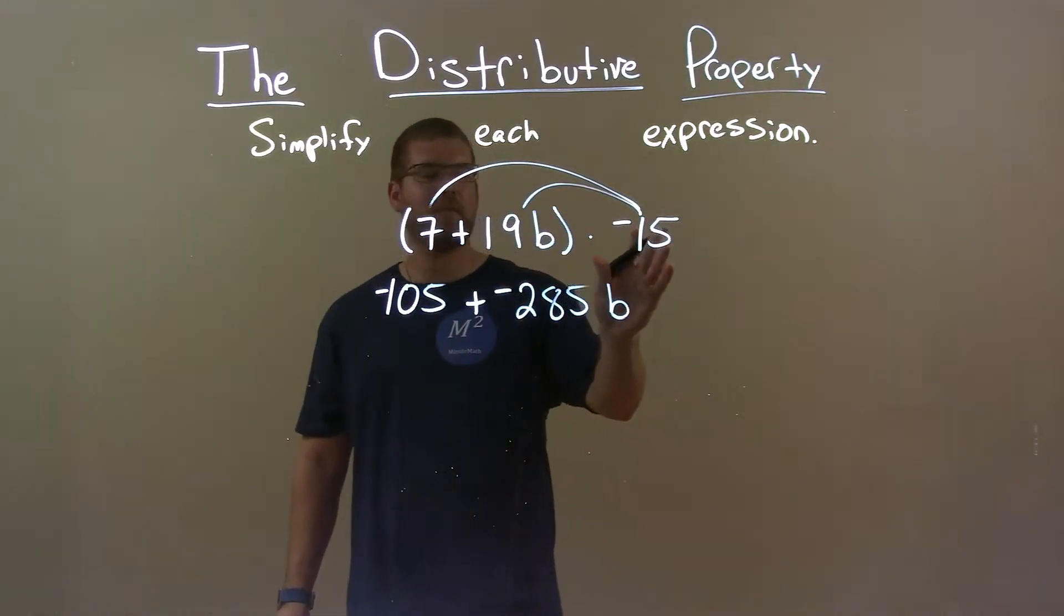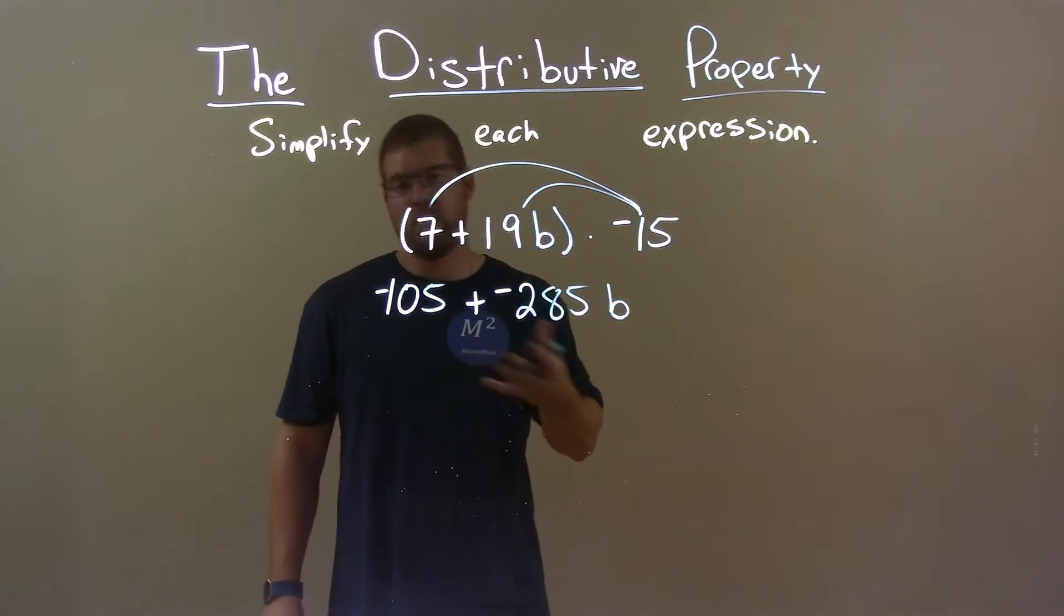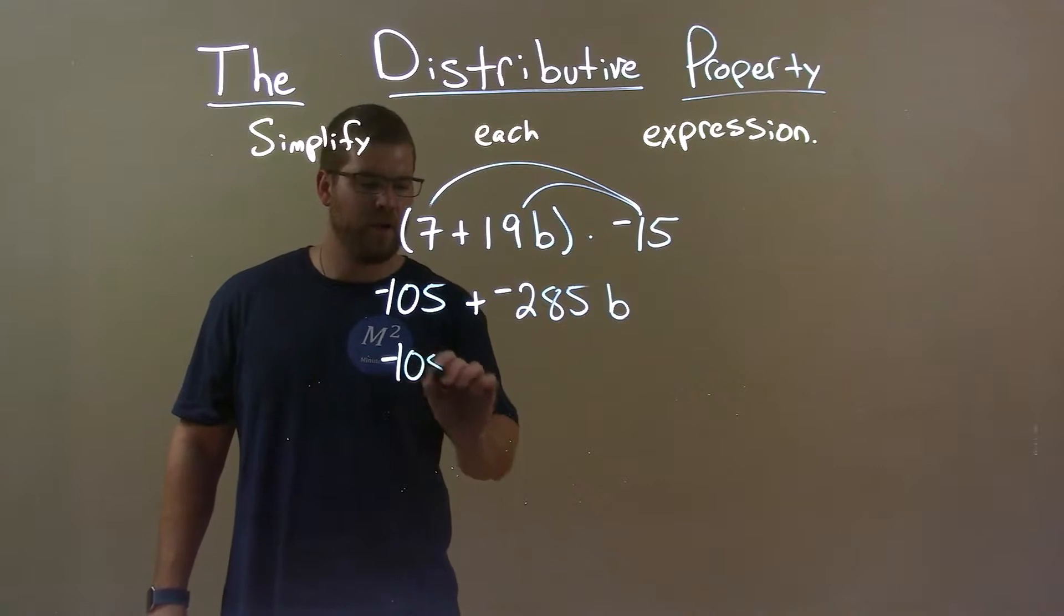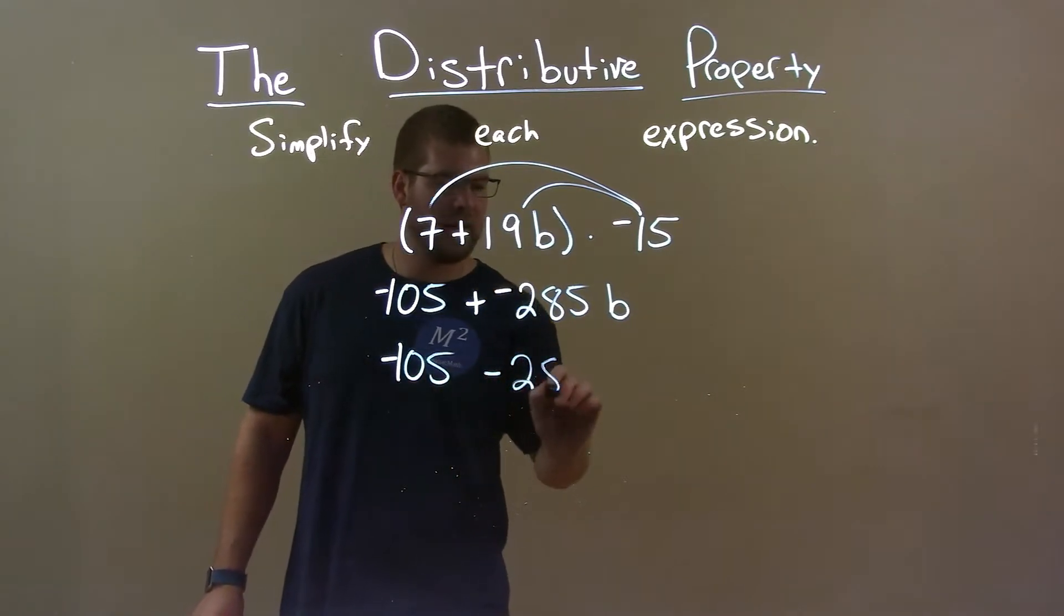So we distributed negative 15 to both parts now. Now we're almost there. Adding a negative is the same thing as subtraction. So we have negative 105 minus 285b.